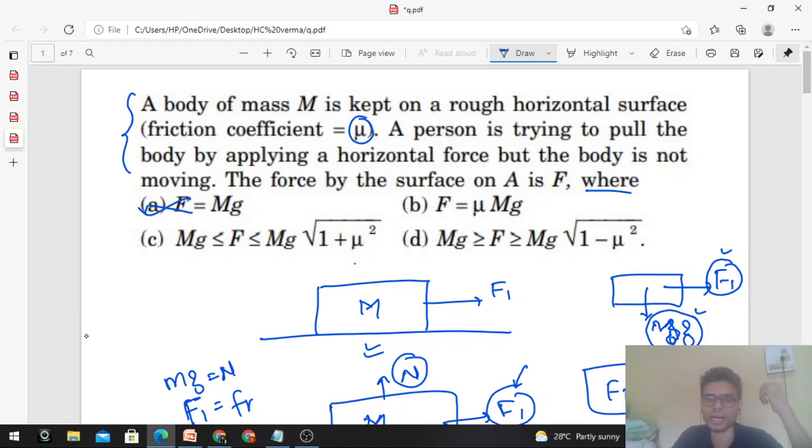F's value that we calculated is √(F1² + M²G²). F1 is also there, so it's not equal to Mg. It's not equal to μMg either.